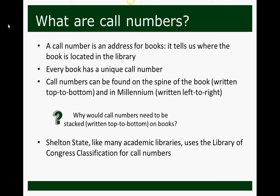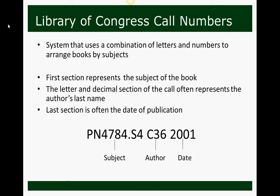Shelton State, like many academic libraries, uses the Library of Congress classification for its call numbers. It's a system that uses a combination of letters and numbers to arrange books by subject. In the example call number at the bottom of the screen, the first section — PN 4784.S4 — represents the subject of the book. The letter and decimal section, C36, represents the author's last name, and 2001 is the date of publication. All of those things come together to form the unique identifier known as the call number.